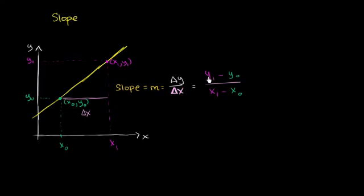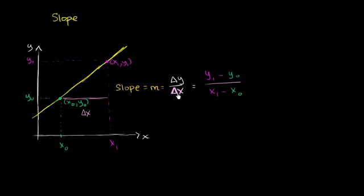Now, you might be saying: could I have done y₀ minus y₁ over x naught minus x₁? Absolutely, you could have done that — you would have gotten the negative of each value in the numerator and denominator, but they would have canceled out. The important thing is that you're consistent: if you're subtracting your starting value from your ending value in the numerator, you have to do the same in the denominator. So this is change in y over change in x — the rate of change of our vertical axis with respect to our horizontal axis.